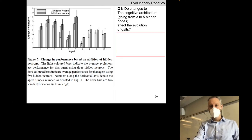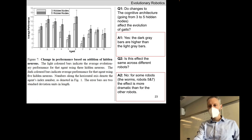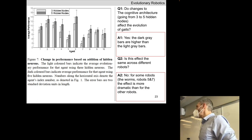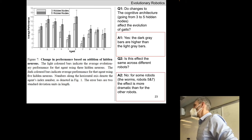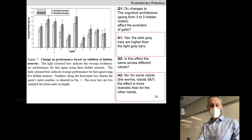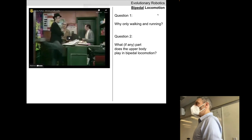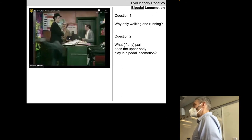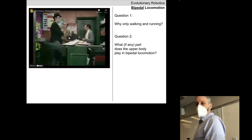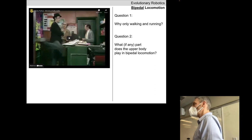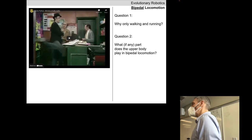Any questions about that before we move on to our particular specialty way of moving? You are all world experts at bipedal locomotion — you exhibit it all day every day for decades. Why only walking and running? We have two gaits we feel comfortable at. As Mr. Cleese just showed us, there's an infinite possible number of gaits. Why just two?